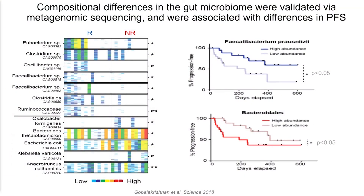We did not see any differences in the oral microbiome. Metagenomic sequencing validated all these findings. We also plotted the top bacteria — Faecalibacterium in responders, Bacteroidales in non-responders — and dichotomized patients into high versus low abundance. Patients with a high abundance of Faecalibacterium had a prolonged PFS, whereas those with a low abundance of Bacteroidales also did well, validating our prior findings.